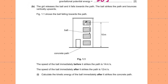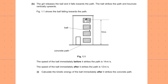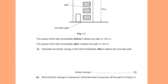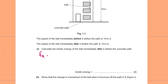We have the ball falling this distance for which we calculated the GPE in the previous part. The speed of the ball immediately before it strikes the path is 14 m/s. The speed immediately after it strikes the path is 12 m/s. Calculate the kinetic energy of the ball immediately after it strikes the concrete path. After means I'll use the speed which is also after the collision.